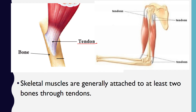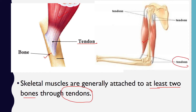Tendons connect muscles to bones. Skeletal muscles are generally attached to at least two bones through tendons. You can see the picture of tendons here — these are muscles, these are bones, and you can see the tendons as well.